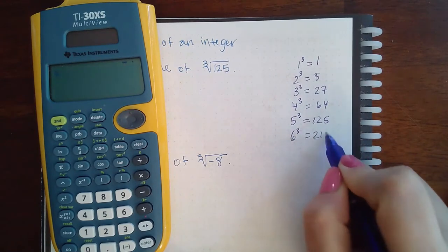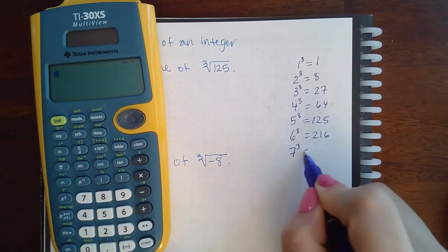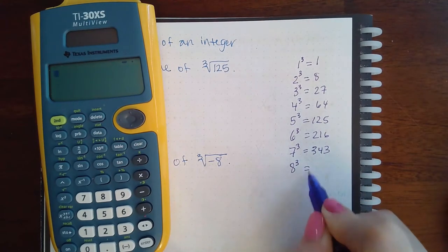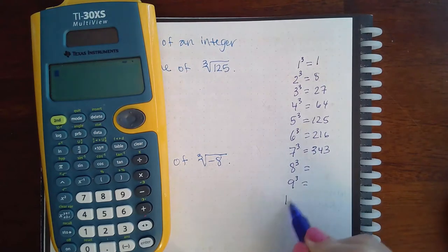6 cubed is 216, 7 cubed is 343, 8 cubed, 9 cubed, and then 10 cubed.